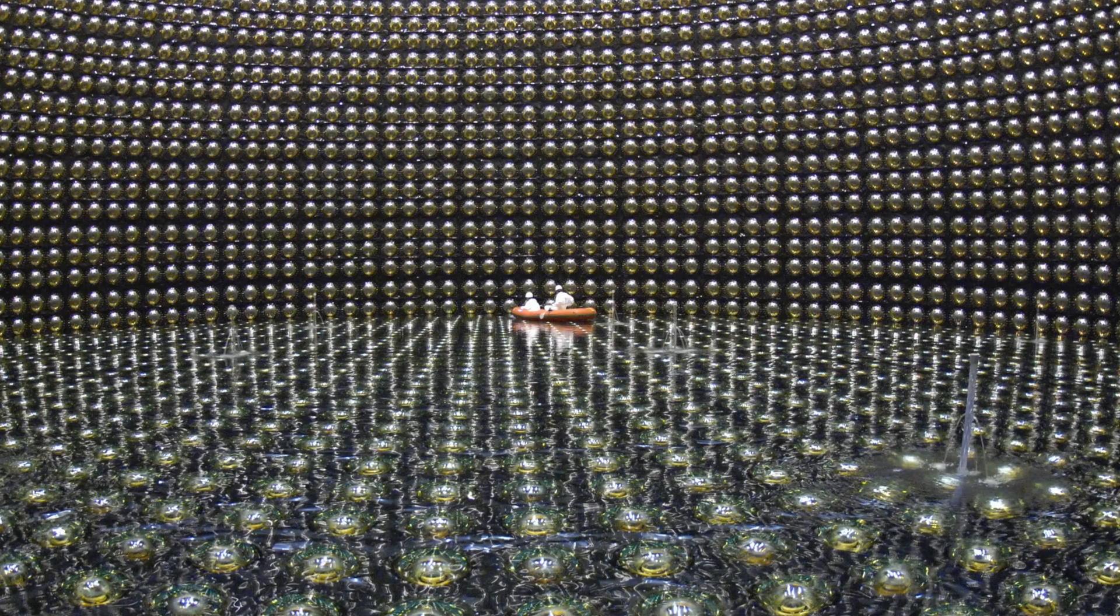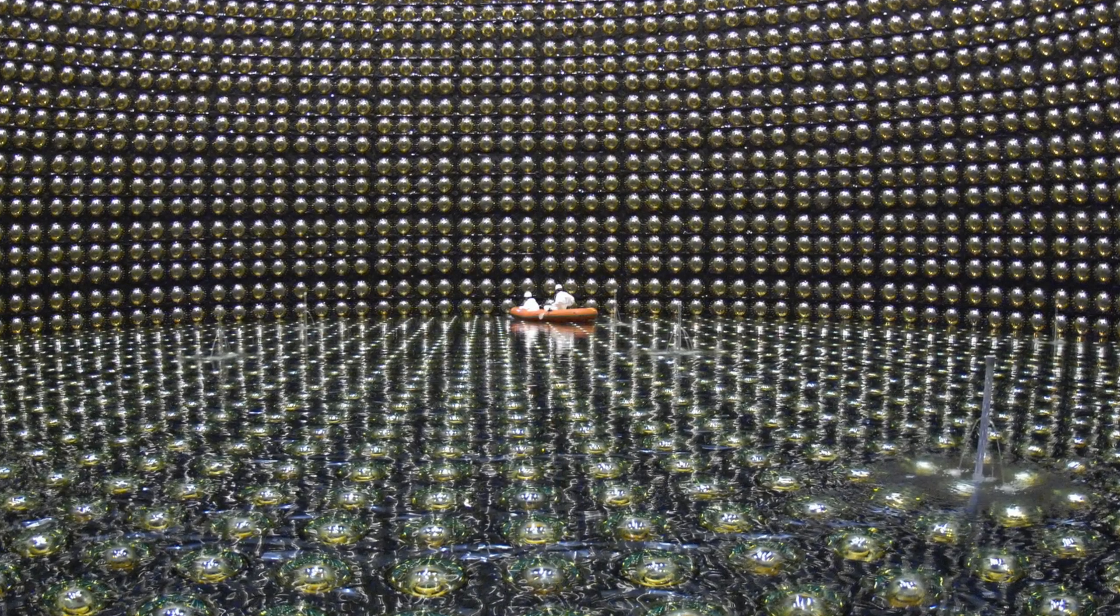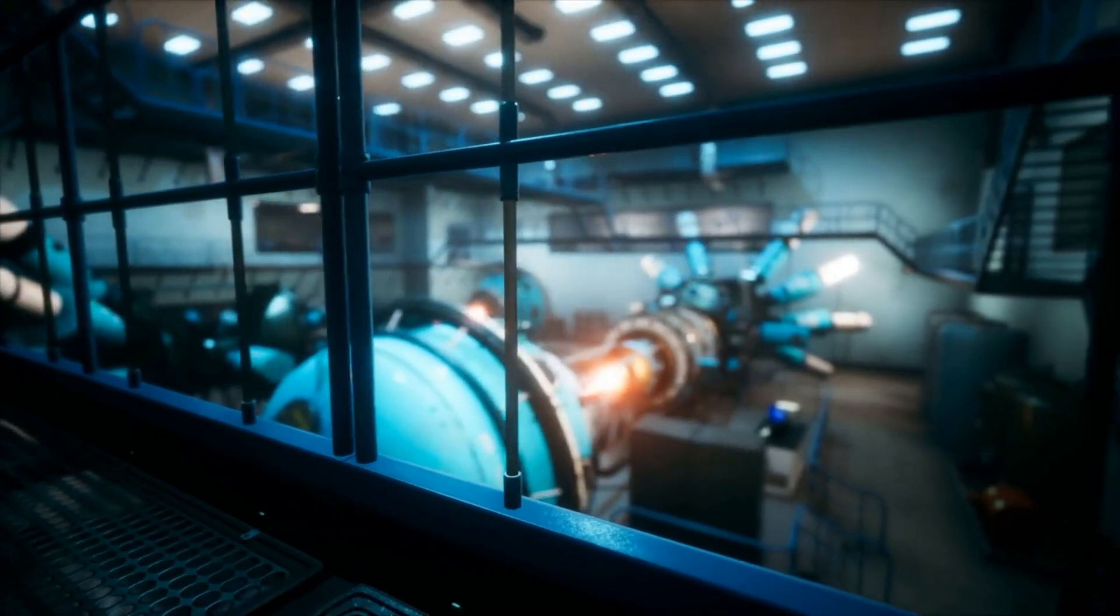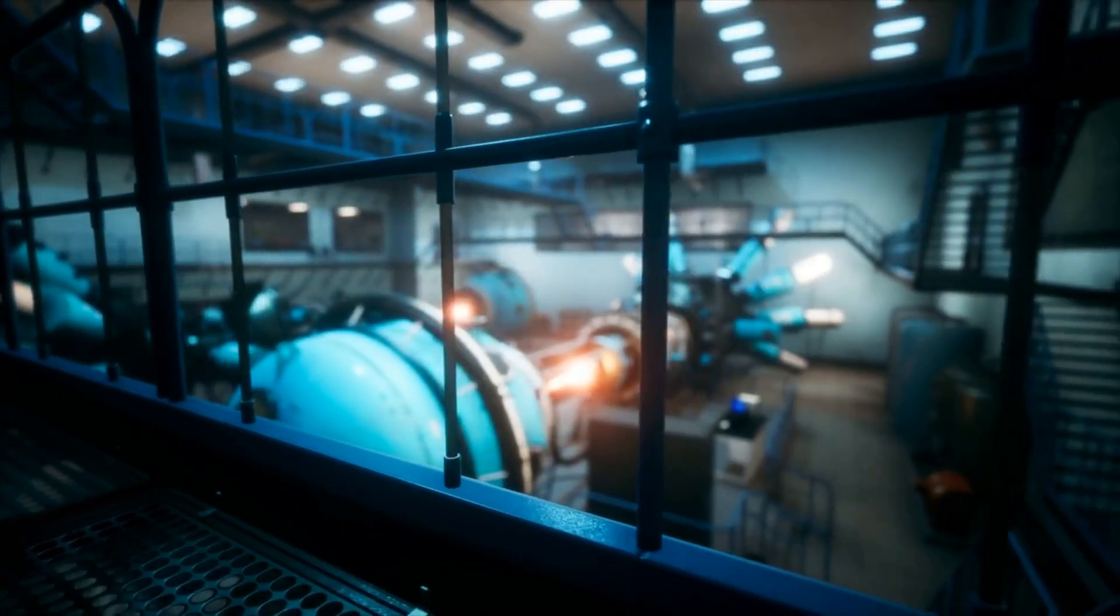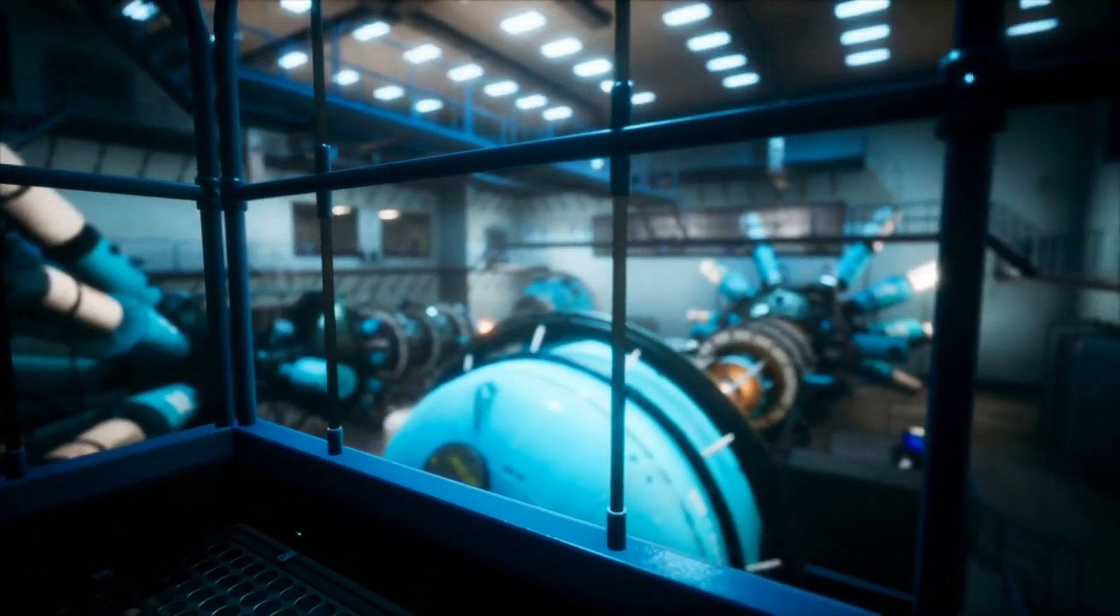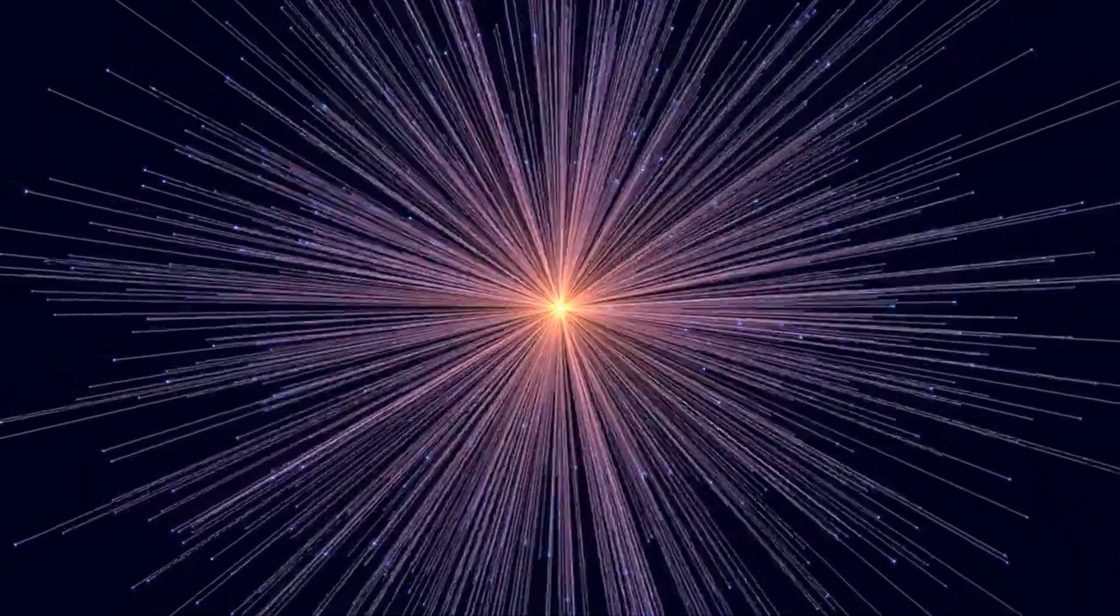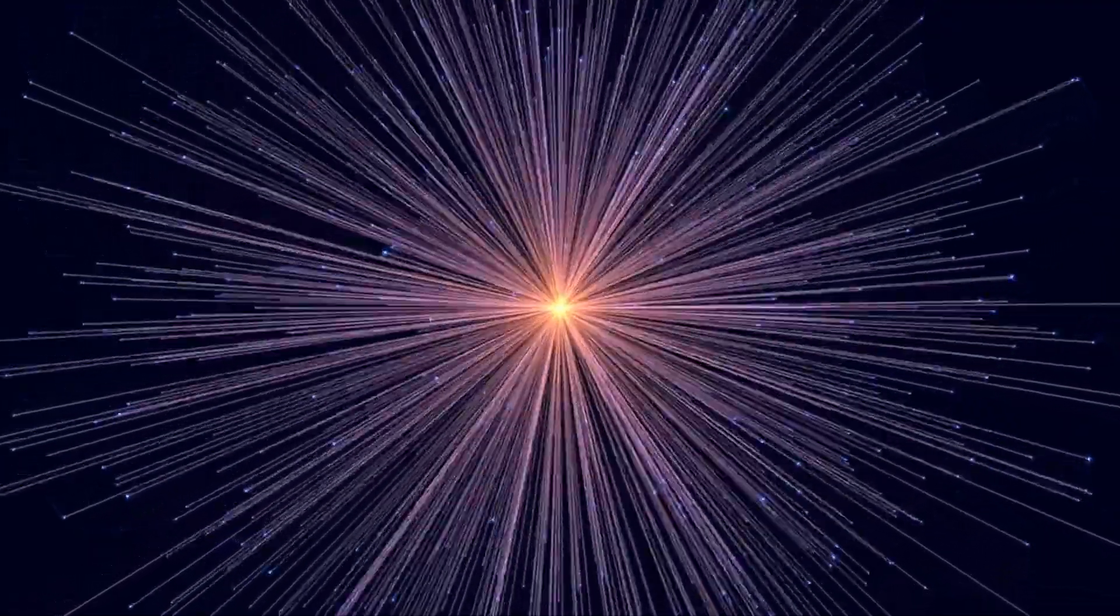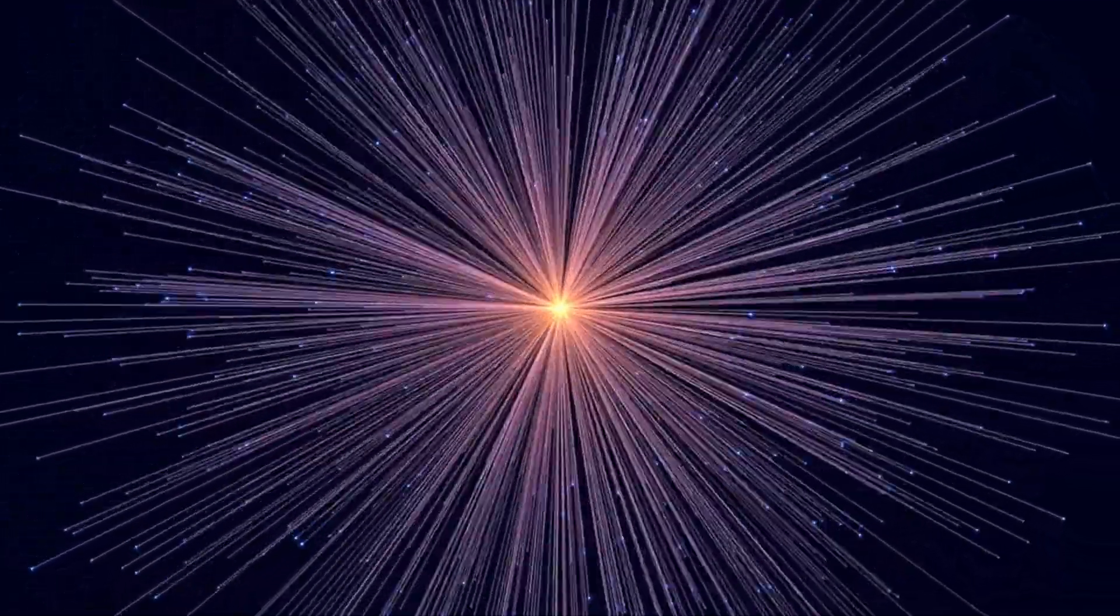Neutrino detectors, like the Super Kamiokande Observatory in Japan, utilize large tanks of water or other materials and detect the rare interactions between neutrinos and matter. These interactions produce light or other detectable signals that can be used to measure the properties of the neutrinos.